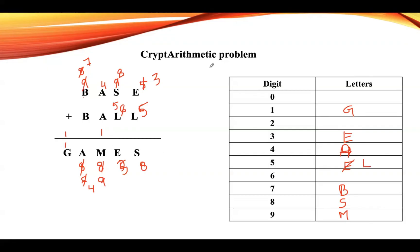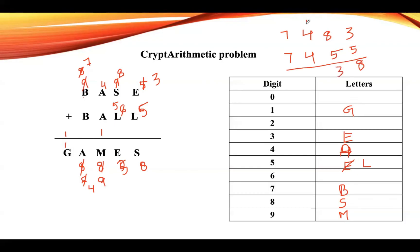So assigning the values: B=7, A=4, S=8, E=3, L=5. BASE is 7 4 8 3 and BALL is 7 4 5 5. Adding them: 5 plus 3 is 8; 8 plus 5 is 13; 4 plus 4 is 8 plus 1 carry is 9; 7 plus 7 is 14, with carry. Result is 1 4 9 3 8 — that is GAMES. We got the same result, so this is your final solution.